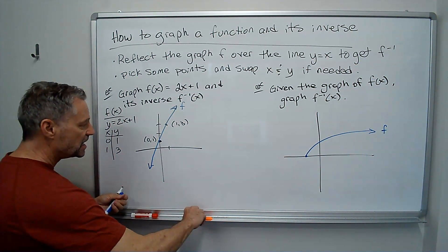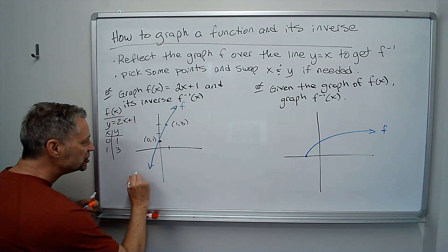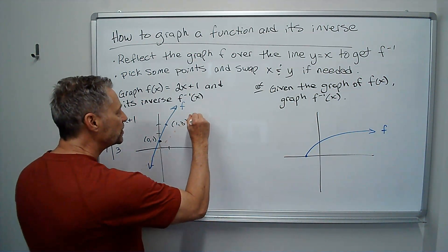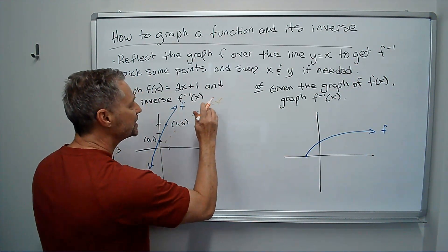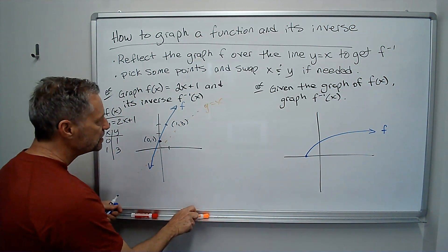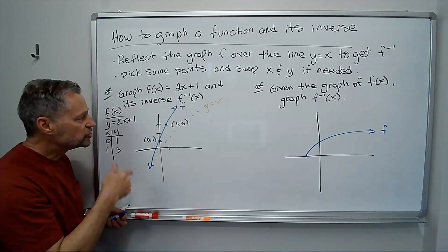I can get the line y equals x, which is just this dotted line going up through here, y equals x. So it goes through 0, 0, 1, 1, 2, 2, etc.